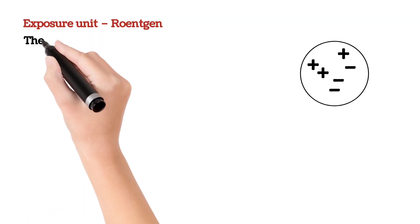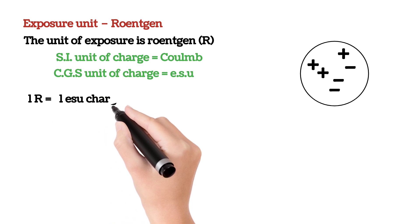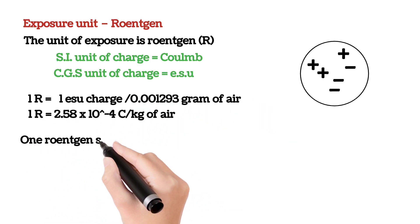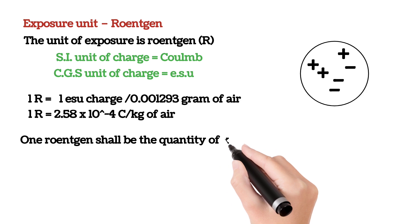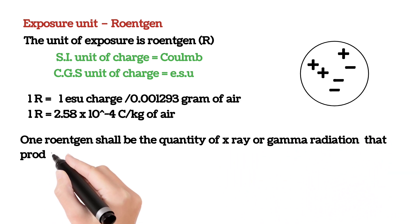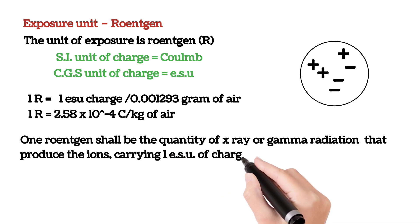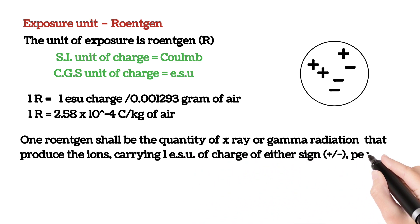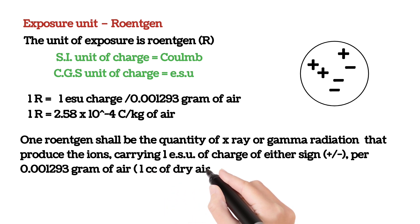The unit of exposure is the roentgen, and it is defined in terms of both units of charge. One roentgen shall be the quantity of X-ray or gamma radiation that produces ions carrying one ESU of charge of either sign in per 0.001293 gram of air.